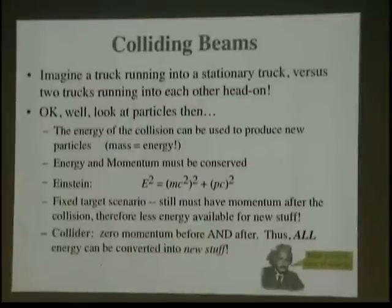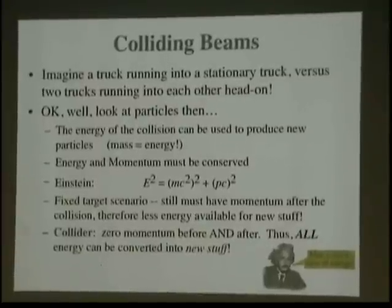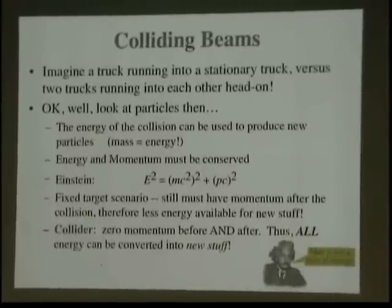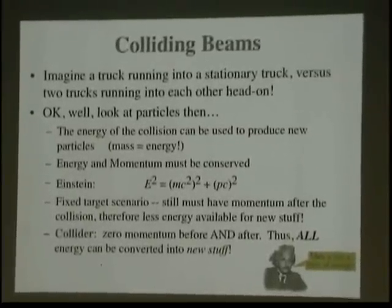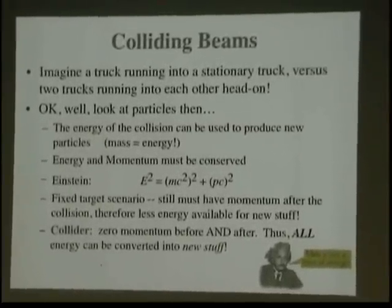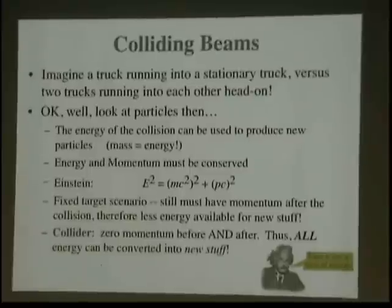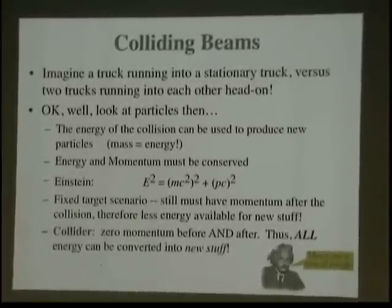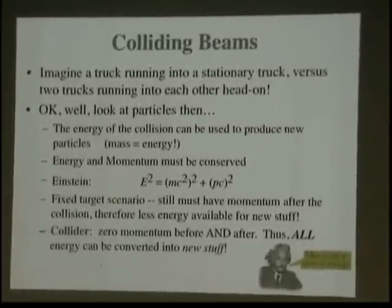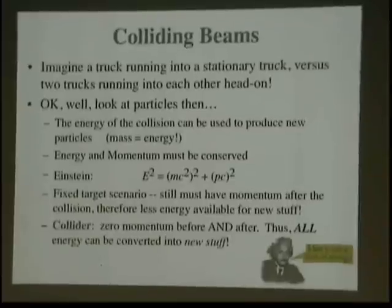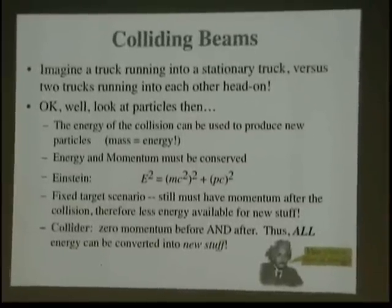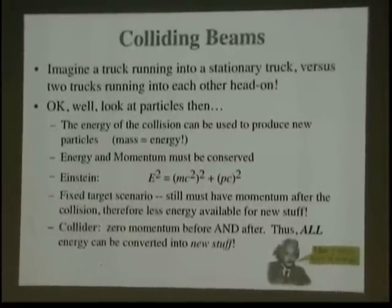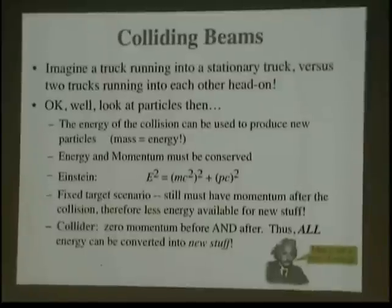I like to think of it this way: imagine a truck running into a stationary truck. You have two trucks — one's going 60 miles an hour and bangs broadside into one stopped at a traffic light. Pretty violent collision, right? But imagine if both trucks were going 60 miles an hour at each other. Which is the more violent of the two collisions? Which is going to result in probably smaller pieces of debris? Probably the second one — the head-on one.